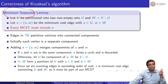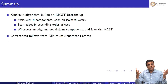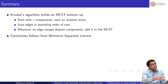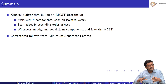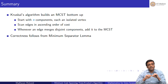Kruskal's algorithm is correct for the same reason Prim's algorithm is correct: the minimum separator lemma. The difference is that Kruskal's algorithm assembles the tree bottom-up — it takes all disconnected things and puts them together — whereas Prim's algorithm starts somewhere and grows the tree gradually to cover everything. Both owe their correctness to the lemma: whenever vertices are partitioned into two disjoint sets, the smallest edge connecting them must be in every MCST.